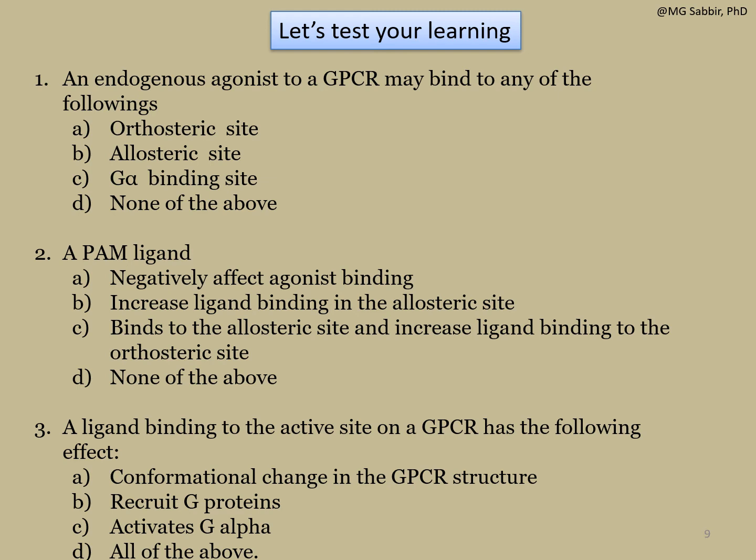Question three: a ligand binding to the active site on a GPCR has the following effects — option A: conformational change in GPCR structure; option B: recruitment of G proteins; option C: activity of G alpha; option D: all of the above. All three options A, B, and C are correct, so the right answer is option D: all of the above.